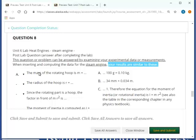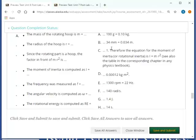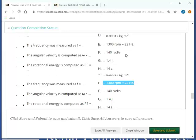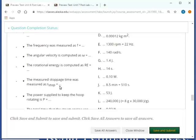So the mass of the hoop is this much. The radius is this much. Since it's a hoop, the rotational inertia comes out to one times m r squared. The moment of inertia is computed as this much. The frequency was measured as this much. And again, you have your own measurement, but it's going to be in the ballpark of that one. Angular velocity when you compute it as this. The rotational energy is this much.